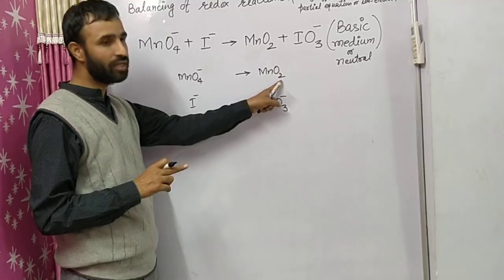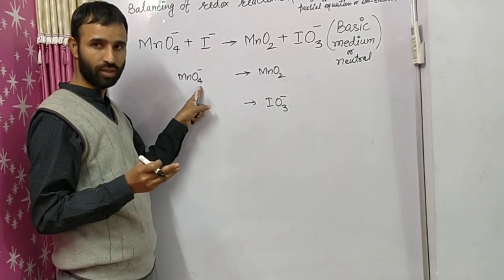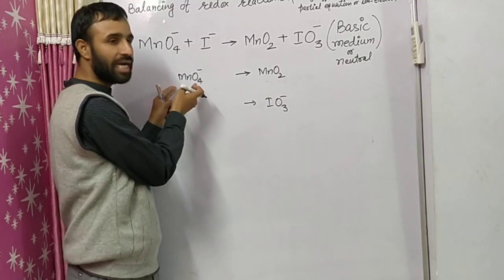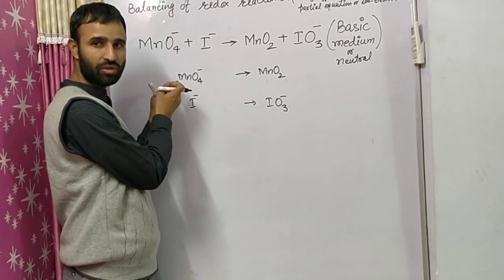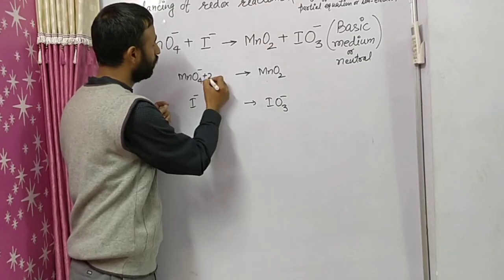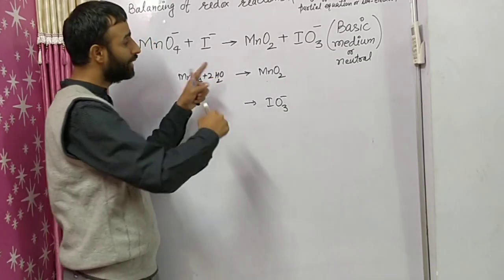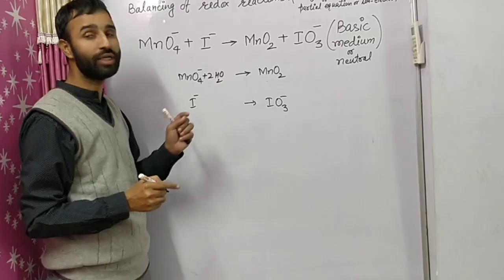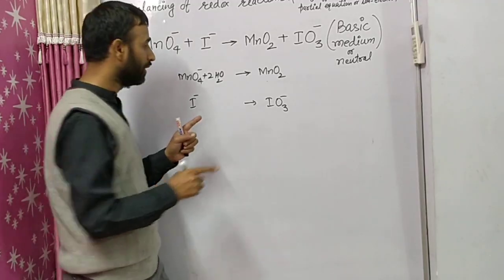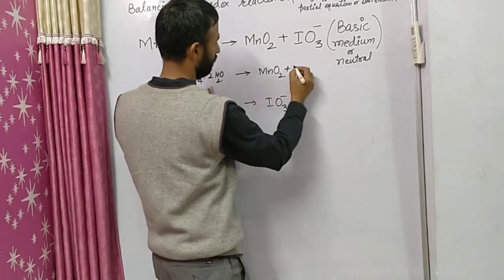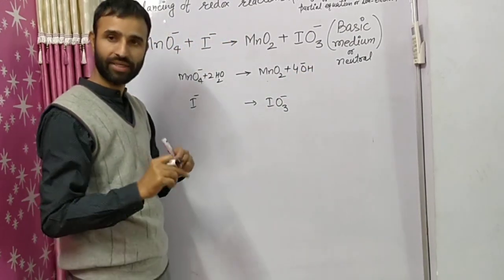Looking at the first half-reaction: this side has two oxygens, the other side has four — so that side has two excess oxygens. We add two H2O to the side with excess oxygen, and double that number — four OH⁻ ions — to the opposite side.